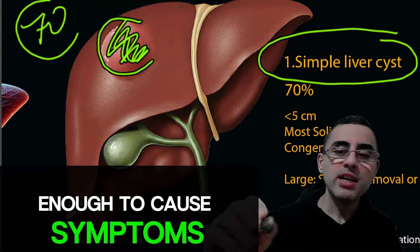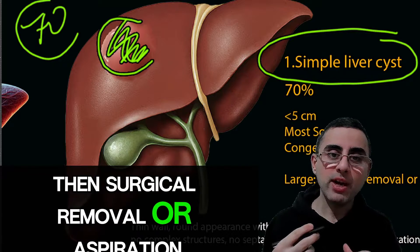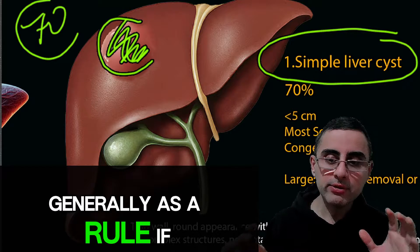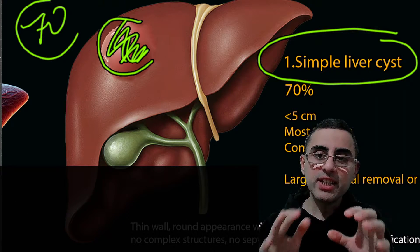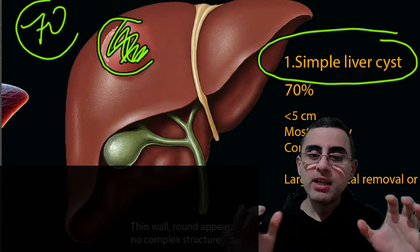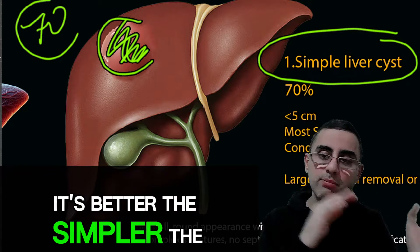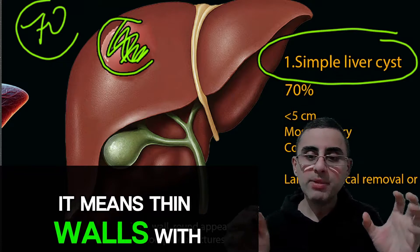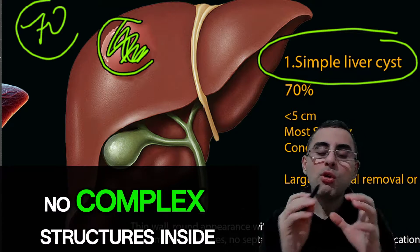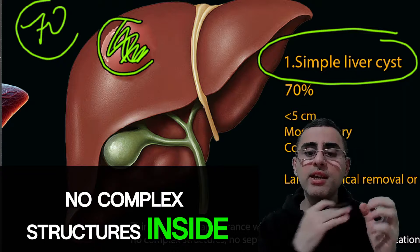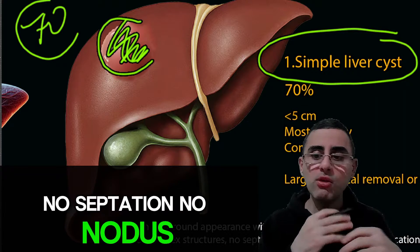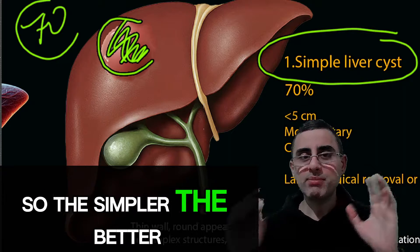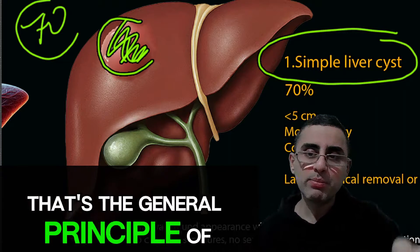But if simple cysts grow large enough to cause symptoms, then surgical removal or aspiration can be a solution. As a general rule: the simpler the better. Simpler means thin walls, fluid inside, no complex structures, no septation, no nodules, and no calcifications inside. So the simpler the better — that is the general principle of liver cysts.